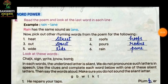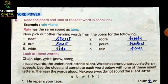Word Power Part A. Read the poem and look at the last word in each line. Rain has the same sound as lane. Now pick out other rhyming words from the poem for the following: heat — street; roofs — hooves; out — spout; pores — roars; wide — tide; rain — pain.